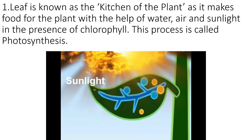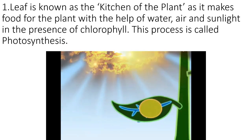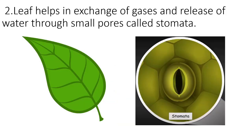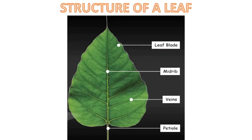This process is called photosynthesis. The leaf also helps in exchange of gases and release of water through small pores called stomata. In some plants, leaves store food also — for example, spinach, cabbage, and lettuce. So now we know that a leaf is made up of different parts such as the leaf blade or lamina, petiole, midrib, veins, and stomata.